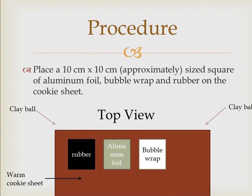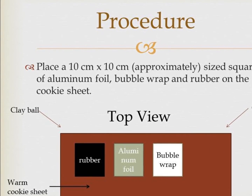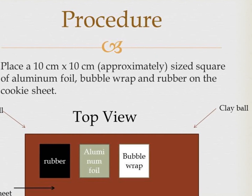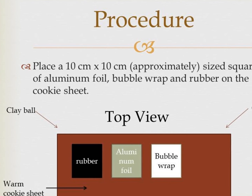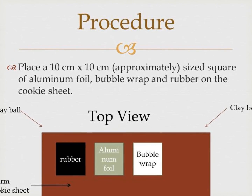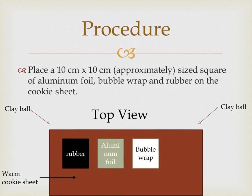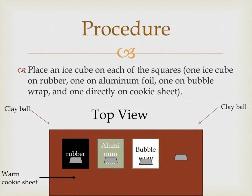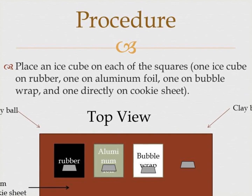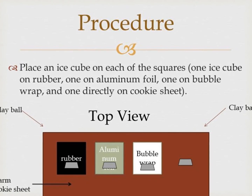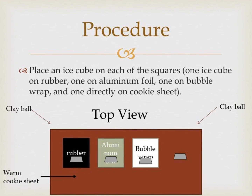Then we're going to place three different squares of different substances: one square of rubber, one of aluminum foil, and one of bubble wrap. Their size doesn't matter — you just need to make sure that all three fit on your cookie sheet with a little extra space on the side. In the next step, you're simply going to take three or four ice cubes — there they are on the video here — and put one on the rubber, one on the aluminum foil, one on the bubble wrap, and then one straight on that warm cookie sheet propped up on the clay.